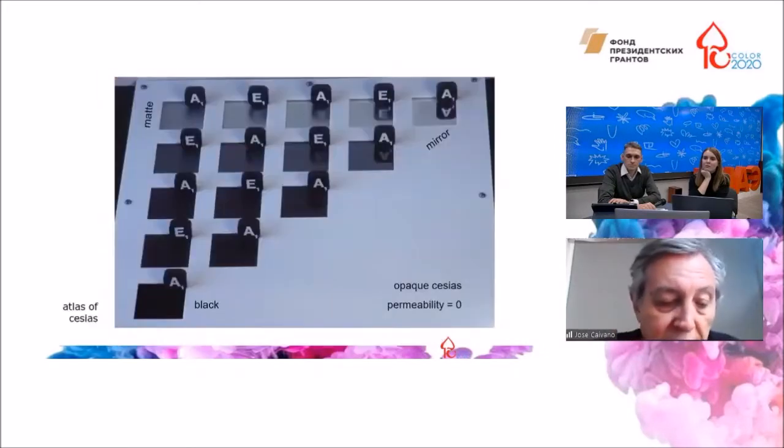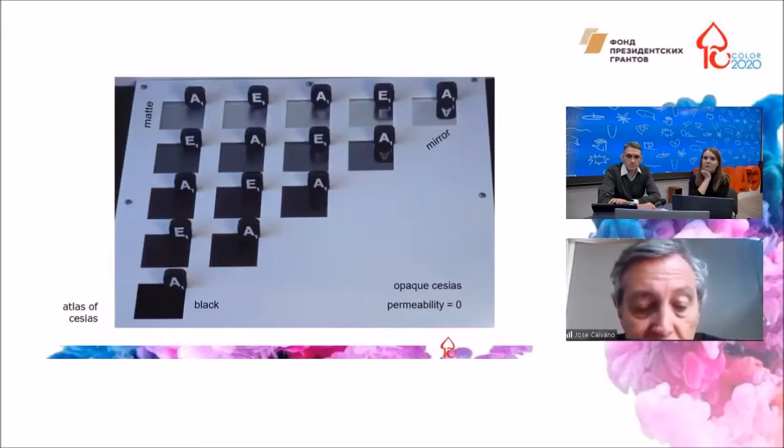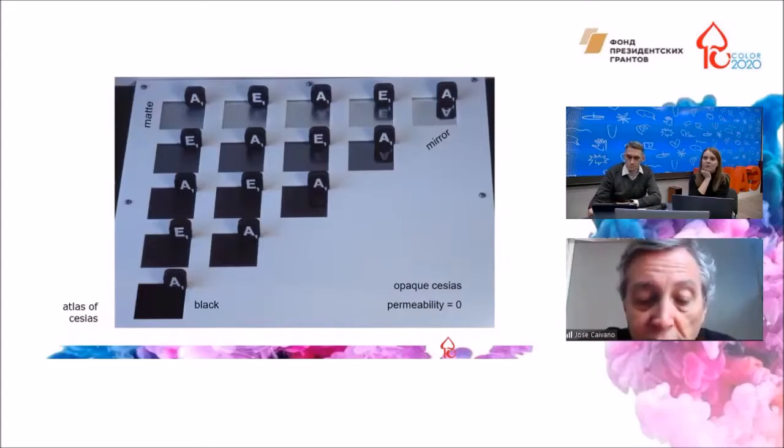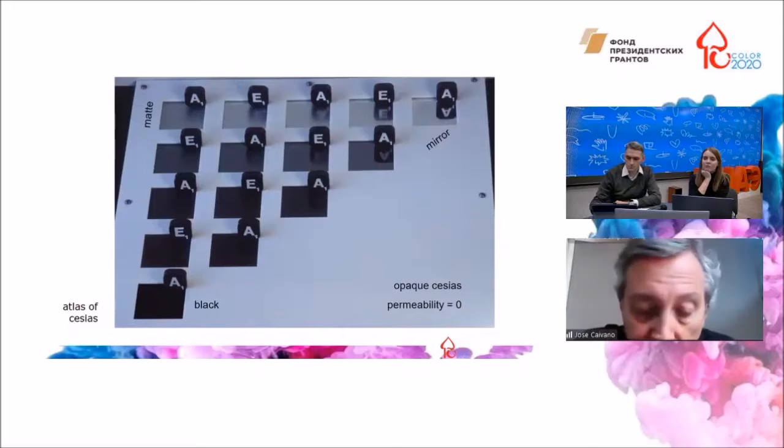Such as there are color atlases with physical samples, we have also the possibility to assemble an atlas of cessias. In this example, it is made with pieces of glass that change in diffusivity from mirror to matte with intermediate steps of gloss and a variation in darkness towards black. Of course, all the samples here in this image are opaque.